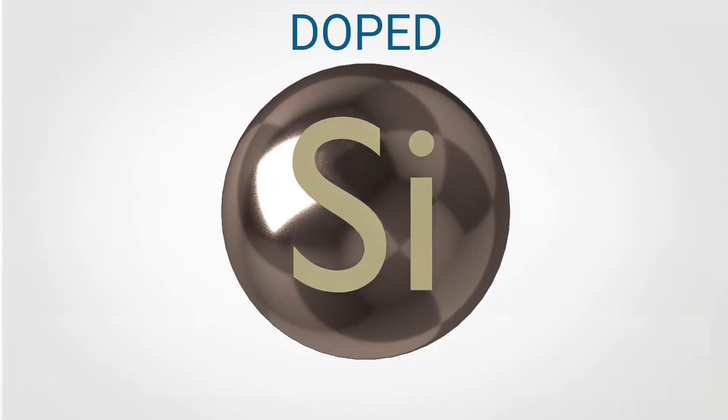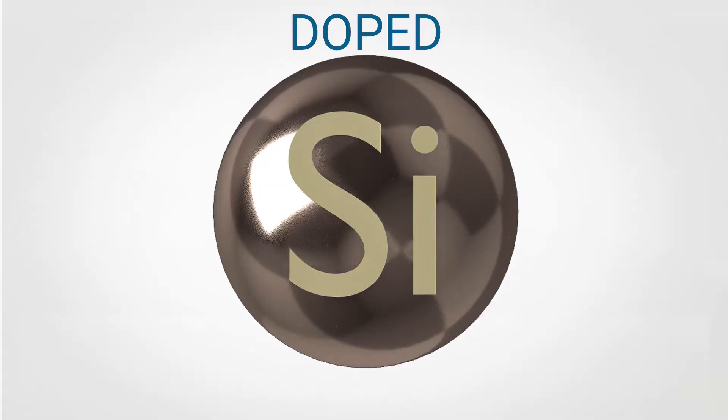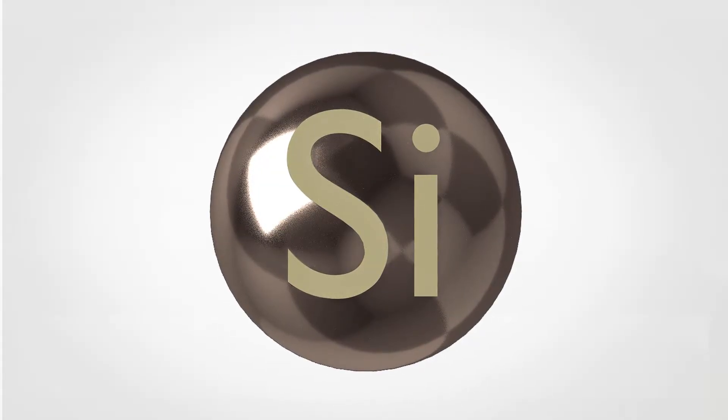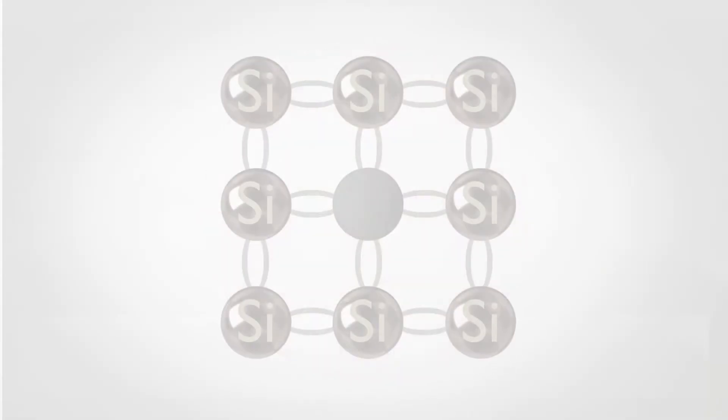For doping, we mean that the impurity inclusion is made by diffusing of certain elements. In general, this is obtained by using a very small percentage of atoms spread within a silicon crystal lattice.